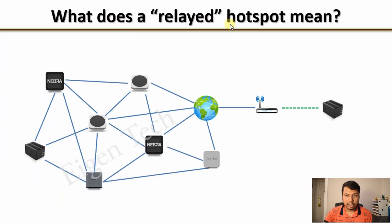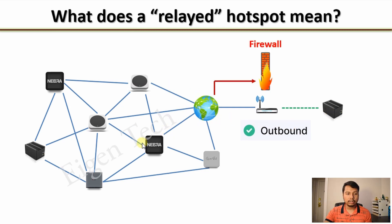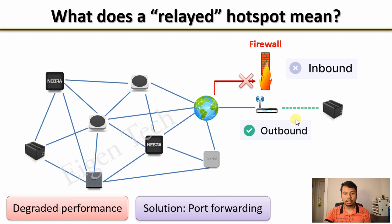Let us first do a quick recap of the problem. What does a relayed hotspot mean? It means that your Helium Hotspot is not directly connected to the peer-to-peer Helium network. All outbound connections are fine but any inbound connection from other Helium Hotspots on the internet is blocked by the firewall of your router. This situation degrades the performance of your Helium Hotspot — in other words, you earn less HNT — and the solution is to perform port forwarding.